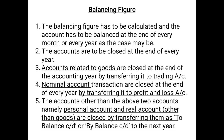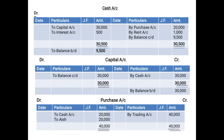Nominal account transactions are closed at the end of every year by transferring the balance to the profit and loss account. Point five: accounts other than the above — that means personal accounts and real accounts, except accounts related to goods — are closed by transferring their balance as 'To Balance Carried Down' or 'By Balance Carried Down' to the next year. That means we do not transfer these balances to trading account or profit and loss account; rather they are carried forward as balance carried down (c/d), meaning we carry the balance to the next accounting year.